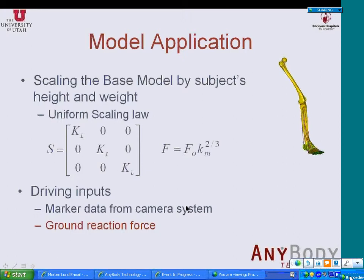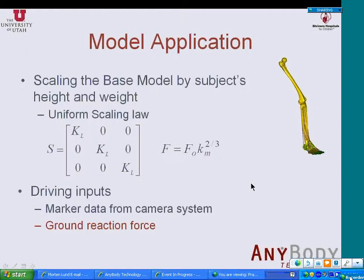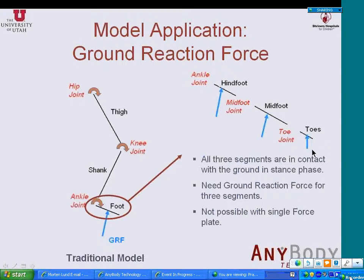Now that we have applied the scaling law and matched the model to the marker data, we need the ground reaction force to apply at each segment at the bottom for the inverse dynamic analysis. Traditionally the foot is a single segment, so we need only one ground reaction force measured by a force plate embedded in the ground. But in our case, we have separated the foot into three different segments — hindfoot, forefoot, and toes — and all three segments are in contact with the ground at some point during the stance phase. Therefore, we need three different ground reaction force vectors for these three segments, which is not possible with a single force plate measurement.